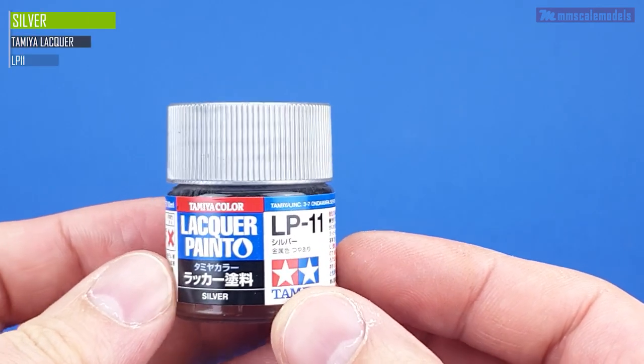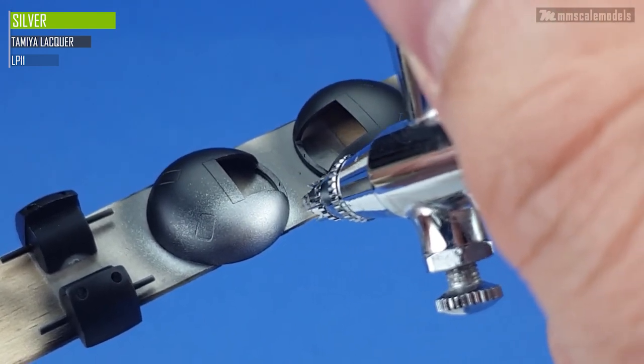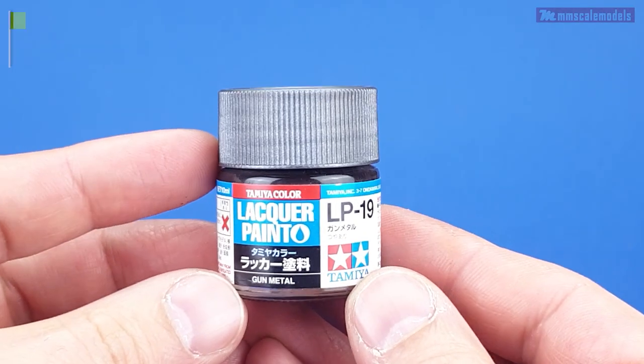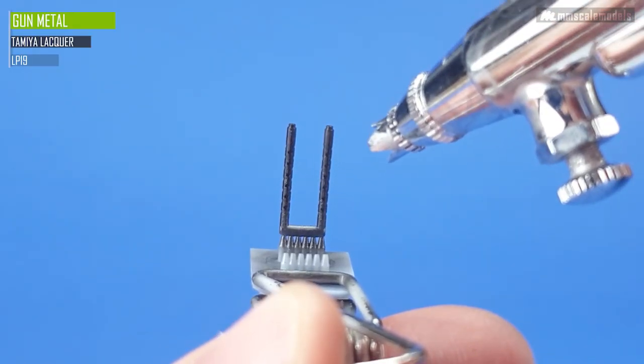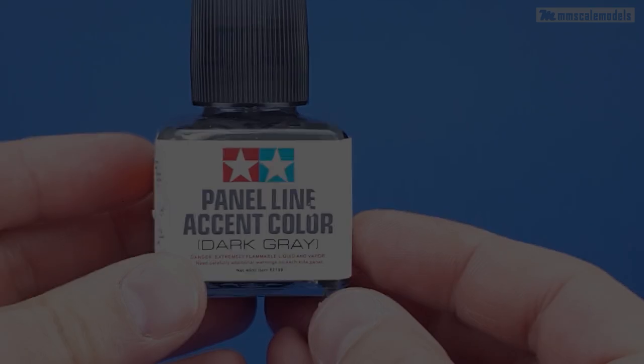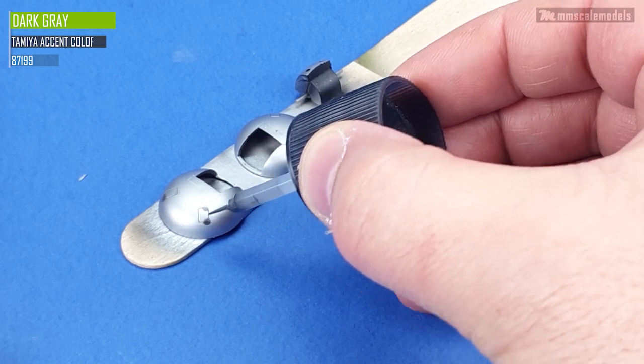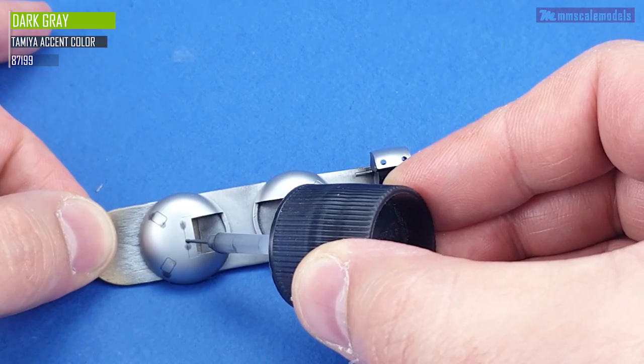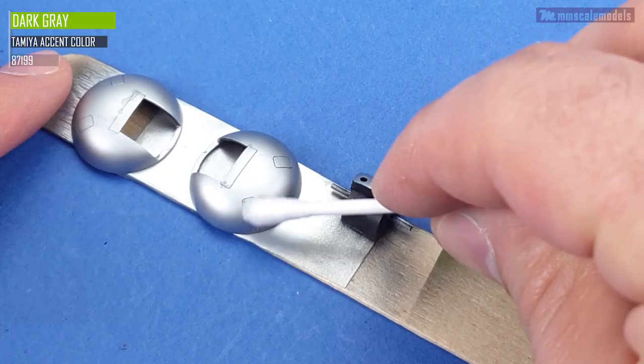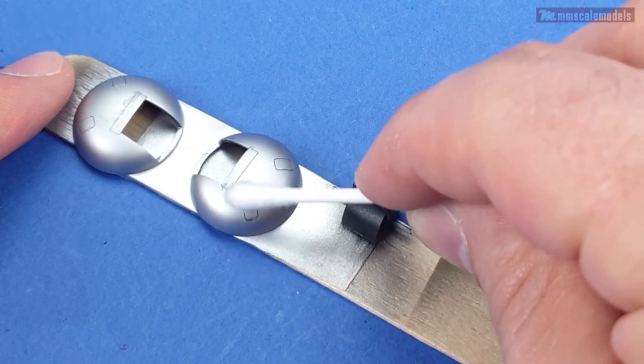Painting started as usual with some black primer. Then I applied Tamiya's LP-11 silver all over the details. Then I applied LP-19 gun metal on the 3D printed gun barrels. For the weathering I started with dark grey panel line accent color from Tamiya. After it was dry I wiped the excess away using a Q-tip very slightly dampened with mineral spirits. I think that this panel line accent color is very suitable for natural metal finishes.